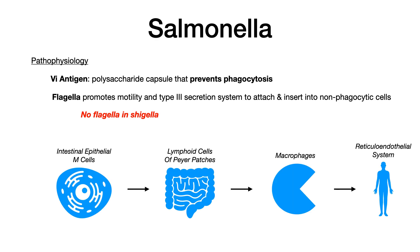In short, salmonella enters through the intestinal epithelium — specifically through the intestinal epithelial M cells. It then reaches the lymphoid cells of the Peyer's patches. After crossing the intestinal epithelium and entering the Peyer's patches, it gets disseminated throughout the reticuloendothelial system, where it can cause serious, overwhelming systemic infection.